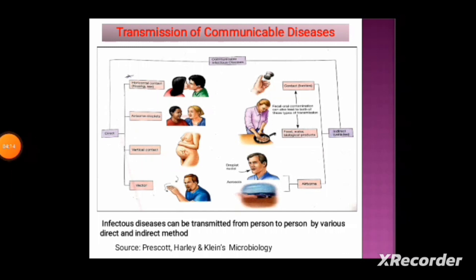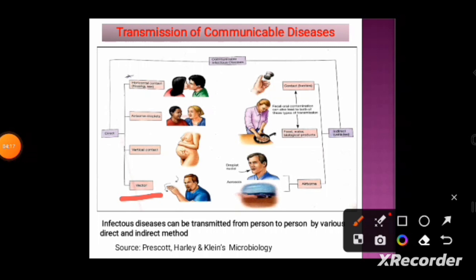Vector-borne diseases are transmitted by vectors such as mosquitoes, flies, and mites — examples include dengue, malaria, chikungunya, Japanese encephalitis, and scrub typhus. For indirect contact, fomites are inanimate objects that help in disease transmission, including thermometers, eating utensils, bedding, and toys contaminated by microorganisms. Other indirect routes include food, water, and biological products such as blood and body fluids.